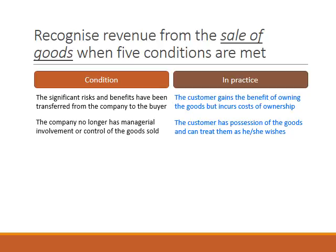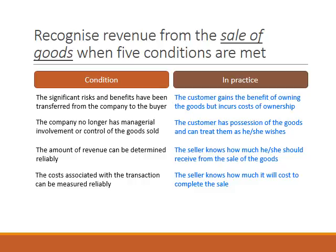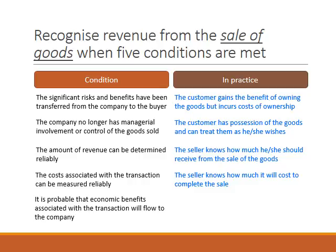The third condition is that the amount of revenue can be determined reliably — so we know what the goods have been sold for. The fourth condition is that the costs associated with the transaction, such as commissions payable and discounts, can be measured reliably, so we know how much all of those costs will come to. Lastly, the fifth condition is that it is probable that the economic benefits associated with the transaction will flow to the company — essentially, the seller thinks that he or she is going to get paid for this sale.